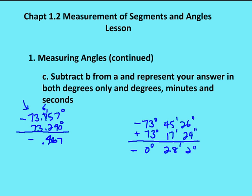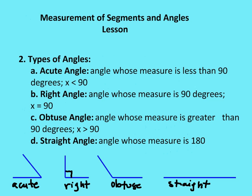Let's move on and talk about types of angles. There are four different types of angles: acute, right, obtuse, and straight.